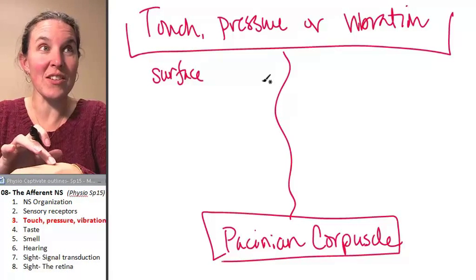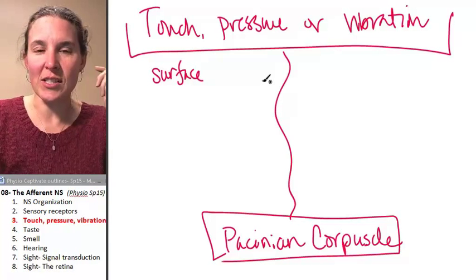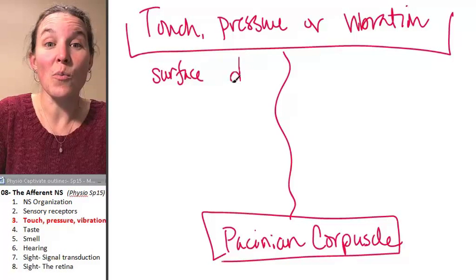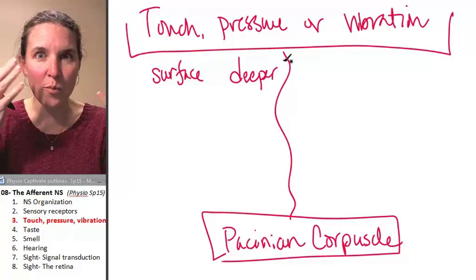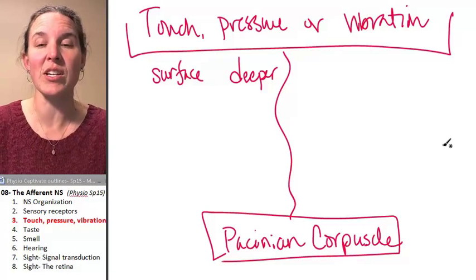But if you're perceiving sensations of pressure, in order to get the pressure sensation, you'd need to deliver the stimulus deeper. So pressure is picked up—sensations of pressure are picked up by Pacinian corpuscles that are found deeper in your skin.